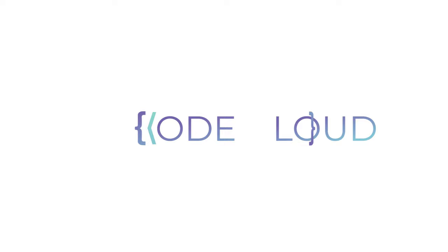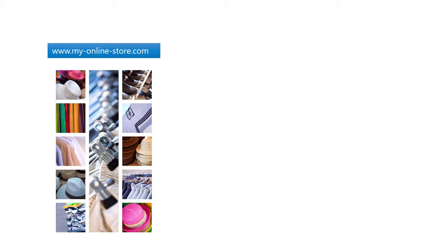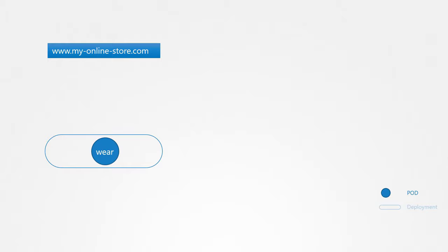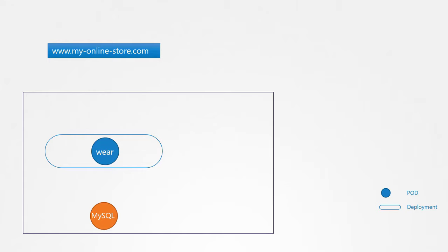We will start with a simple scenario. You are deploying an application on Kubernetes for a company that has an online store selling products. Your application would be available at my-online-store.com. You build the application into a Docker image and deploy it on the Kubernetes cluster as a pod in a deployment. Your application needs a database, so you deploy a MySQL database as a pod and create a service of type ClusterIP called MySQL service to make it accessible to your application.